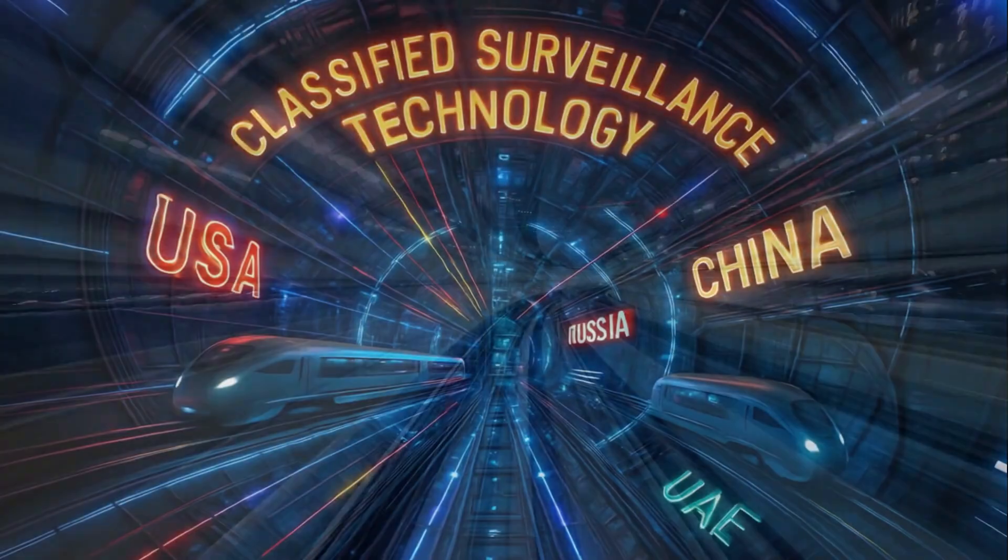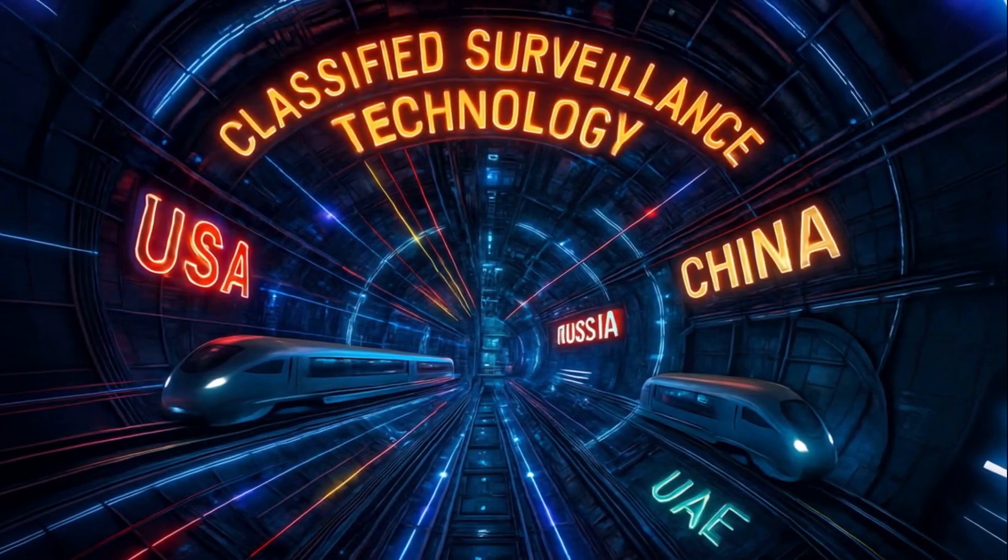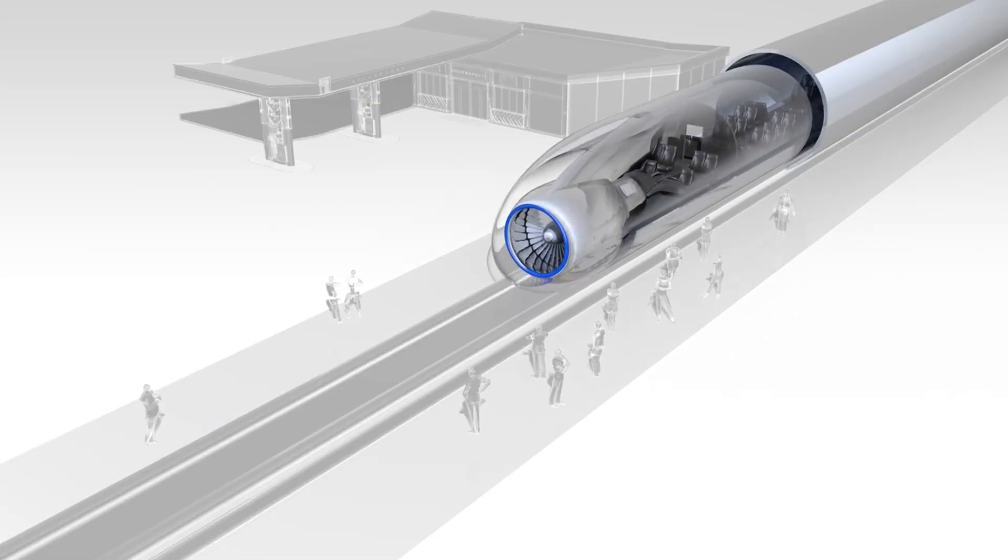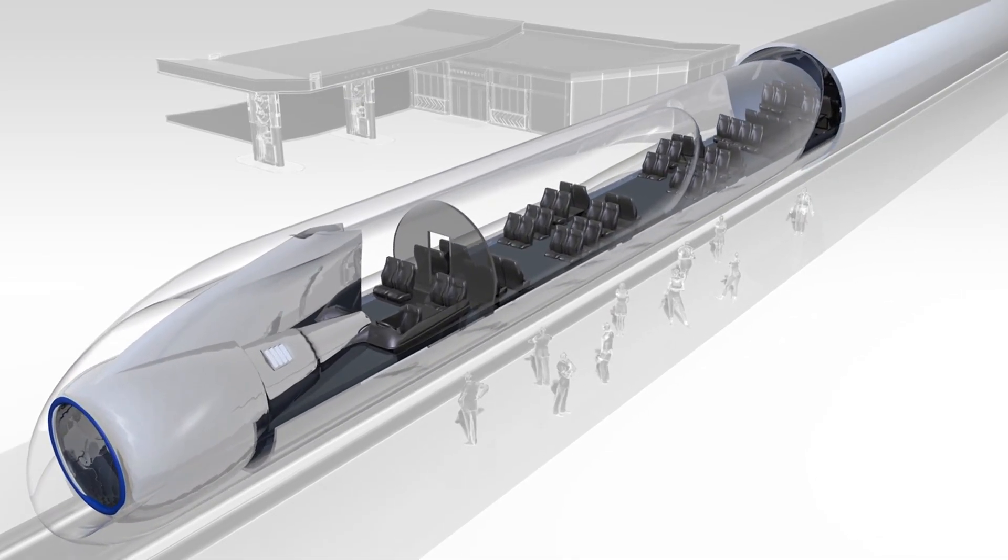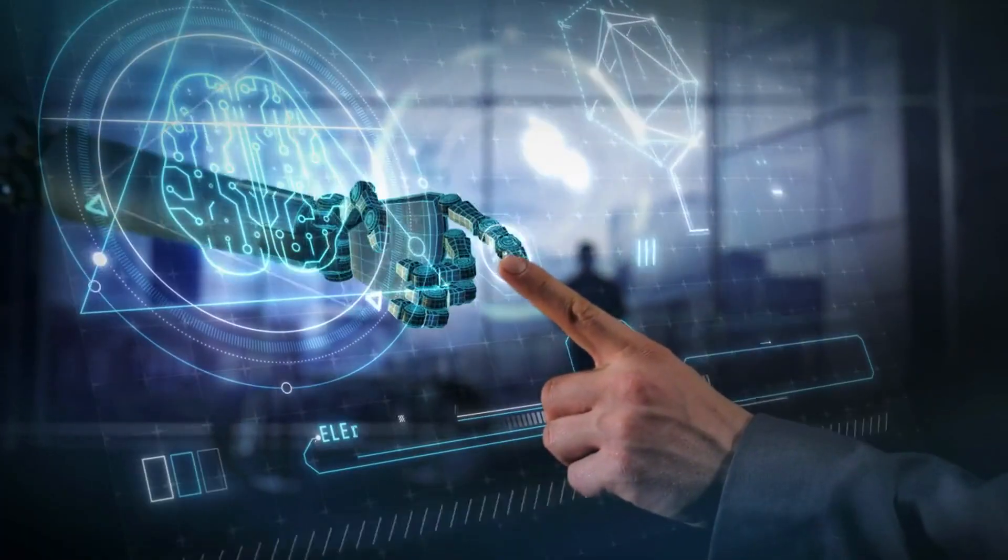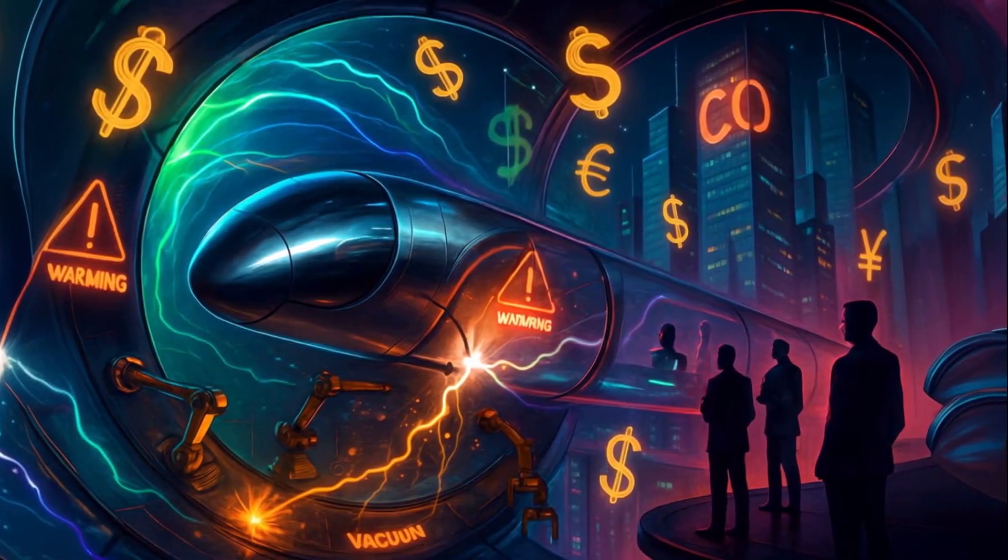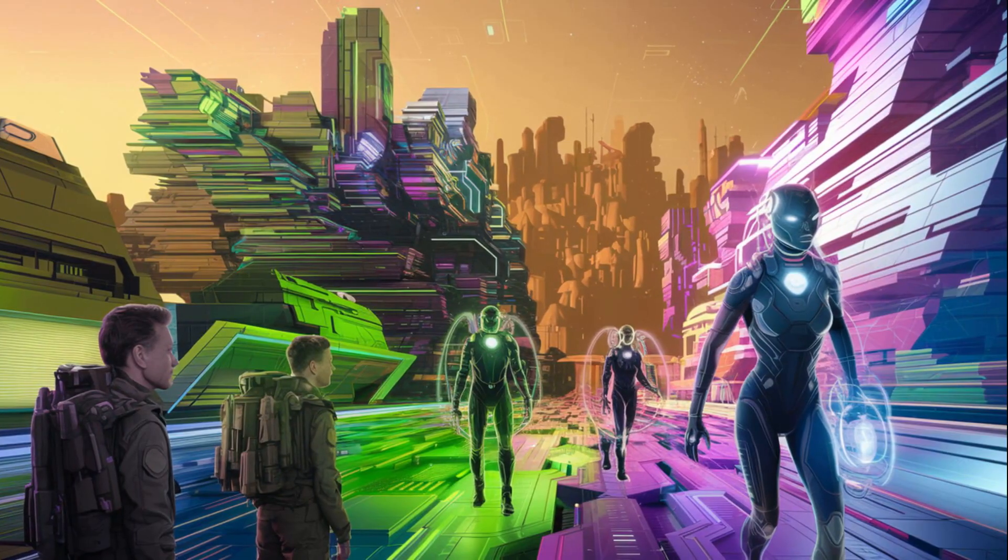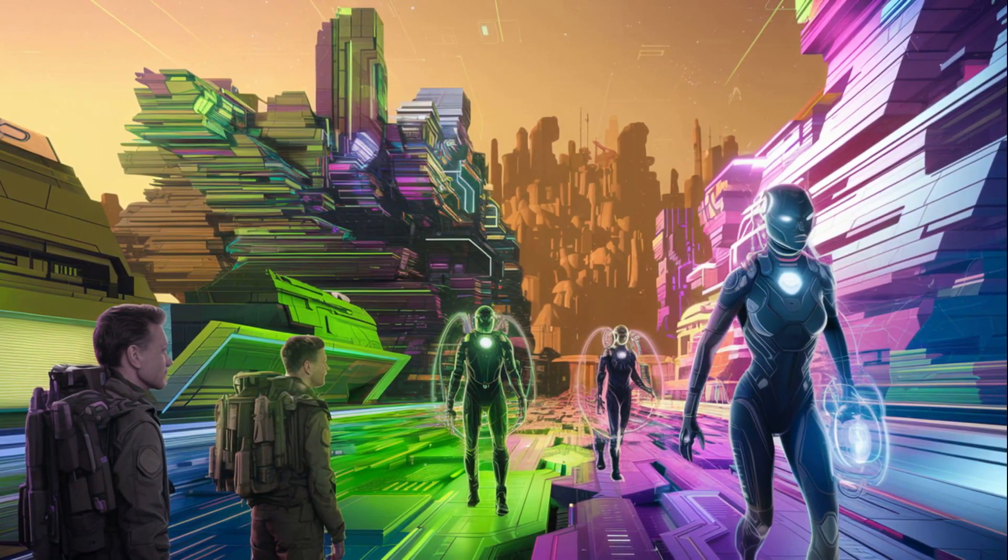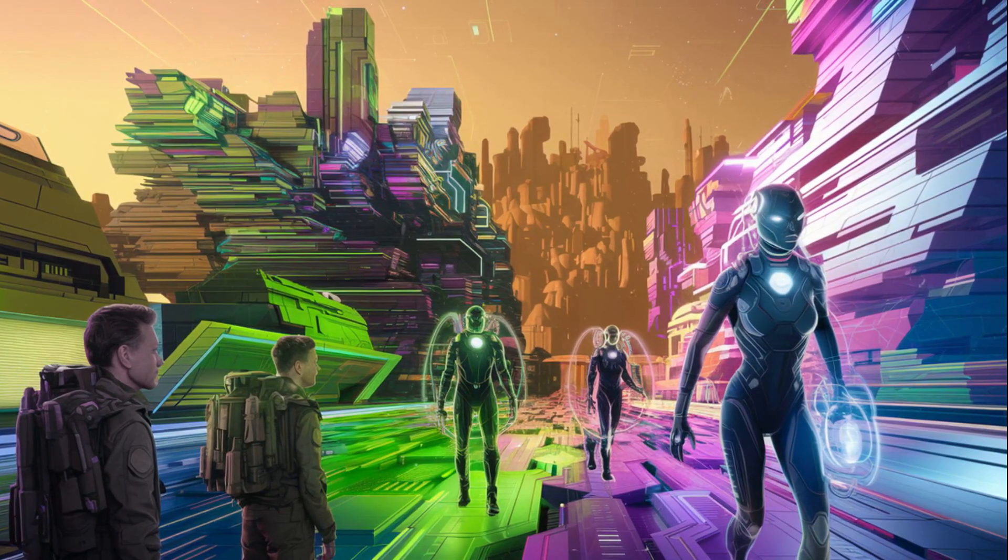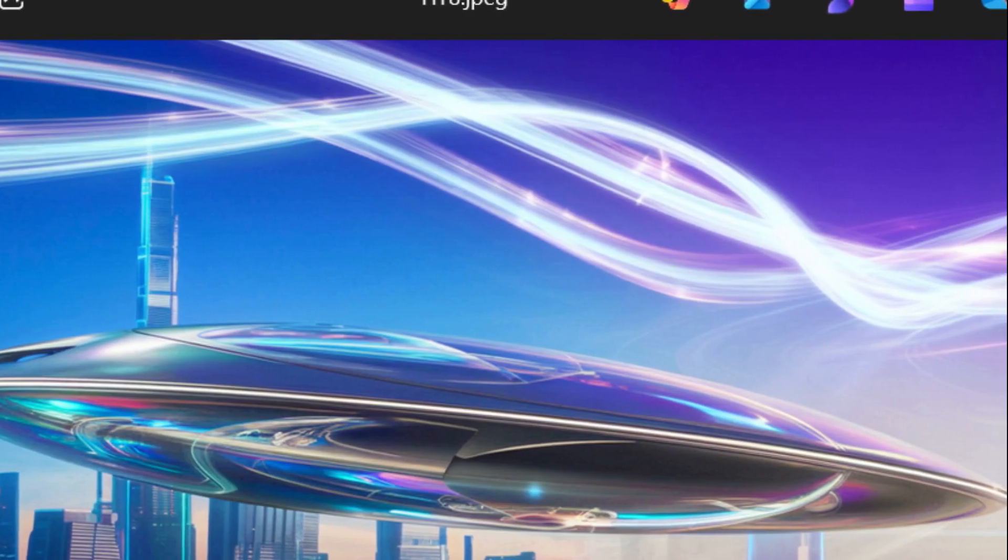And here is where it gets even wilder. The global race for maglev dominance isn't about convenience, it's about control. The U.S., China, Russia, and the UAE are reportedly embedding classified surveillance tech inside maglev infrastructures, turning transportation corridors into real-time data collection highways. What if your daily commute becomes part of a geopolitical surveillance war? And while governments claim they are building these systems for the people, whistleblowers say there is a secret tier of elite-only vacuum pods equipped with escape hatches, EMP shielding, and direct access to underground bunkers. This isn't just about speed, it is about power, secrecy, and control.